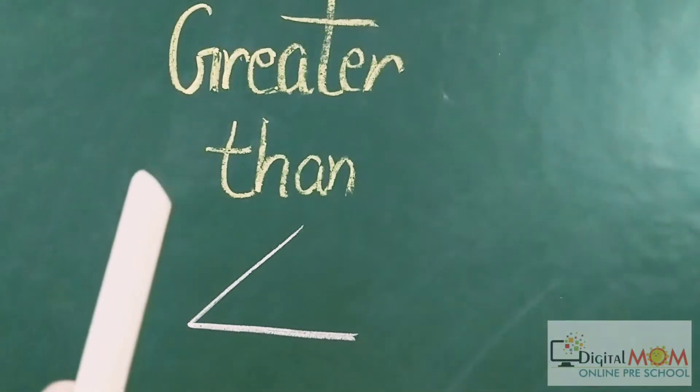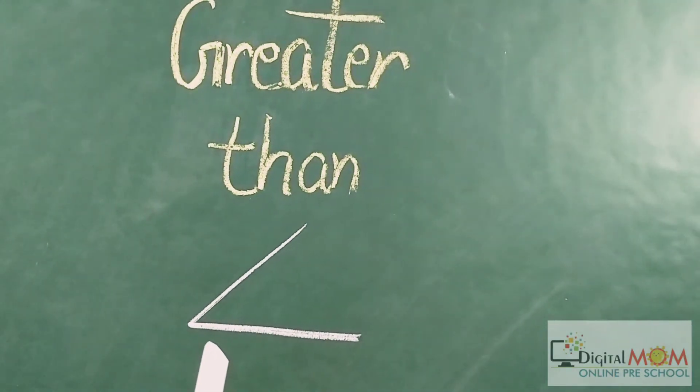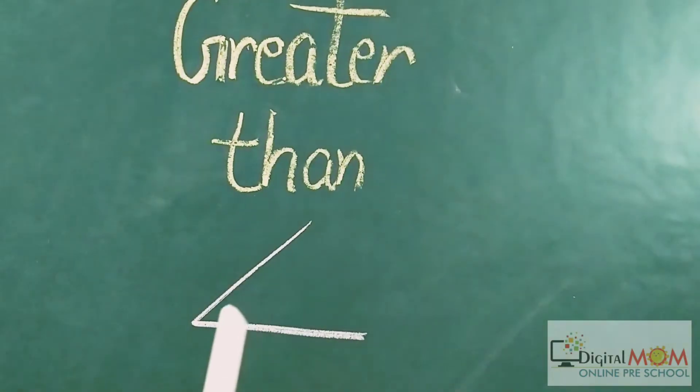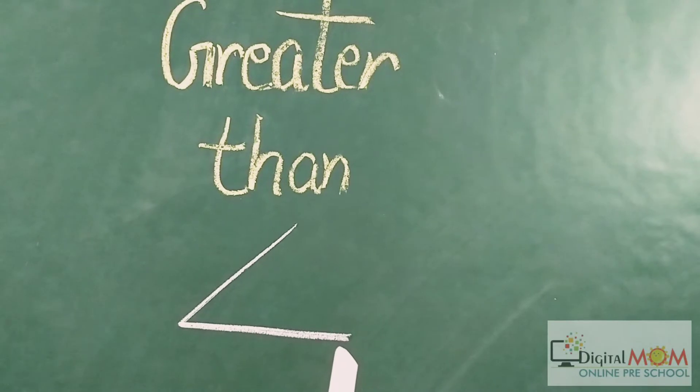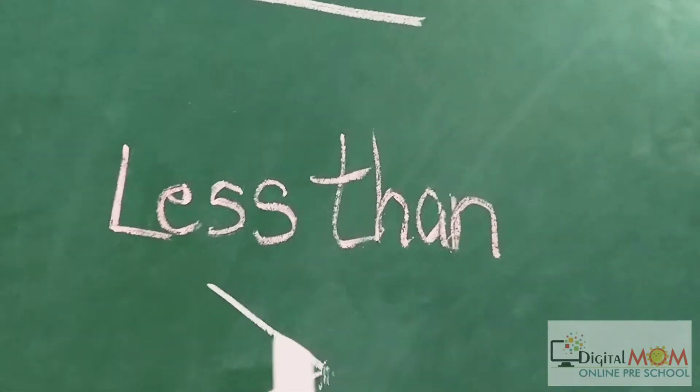If you see, greater than looks like the alligator's mouth. It is always open towards the greater number.